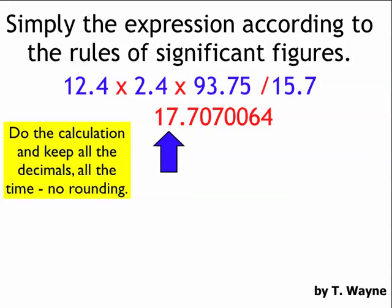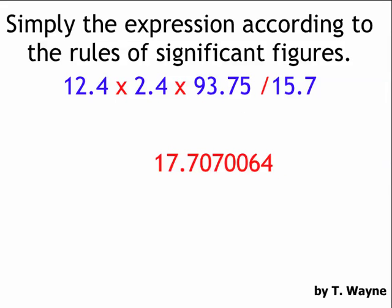This is going to help me figure out where I'm going to round all these numbers with this little rule of mine. To begin with, I'll look at the first number, 12.4, that's three sig figs. 2.4 is two sig figs. 93.75 is four sig figs.